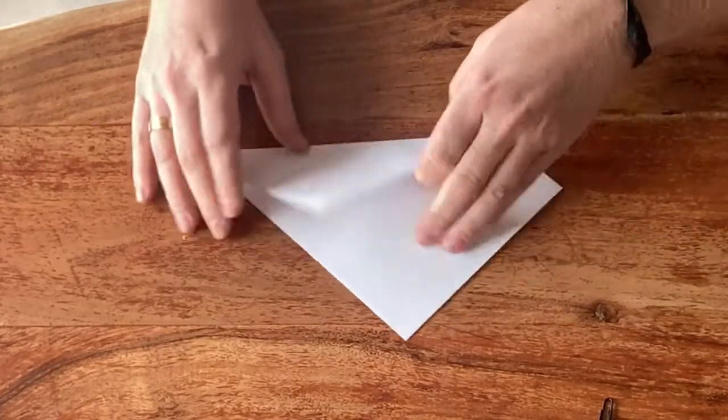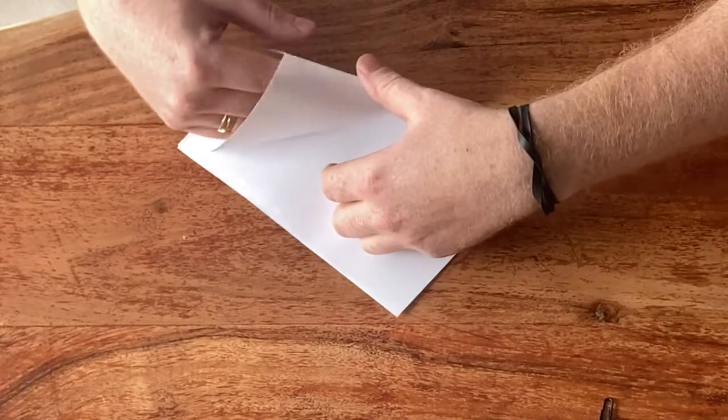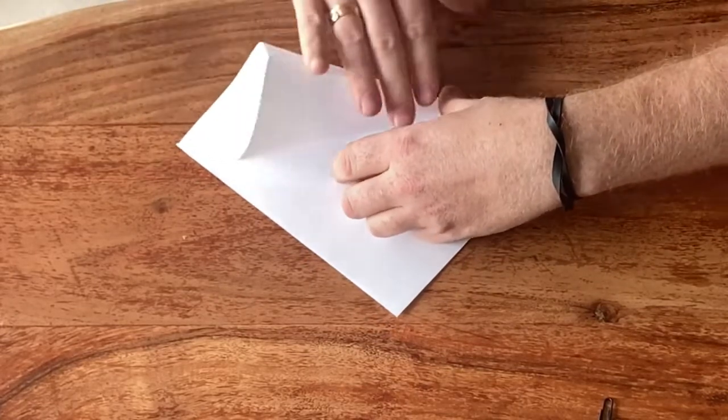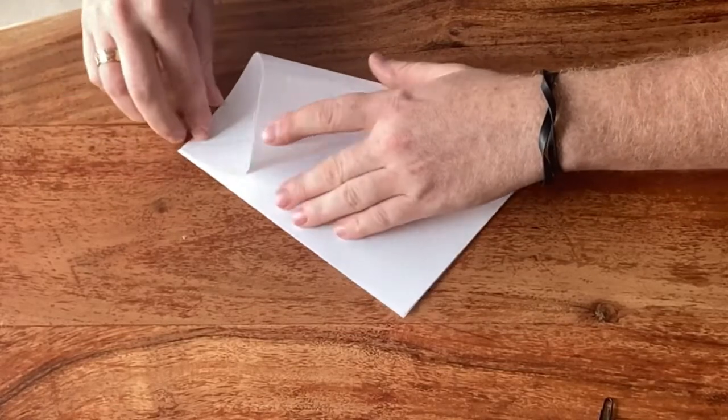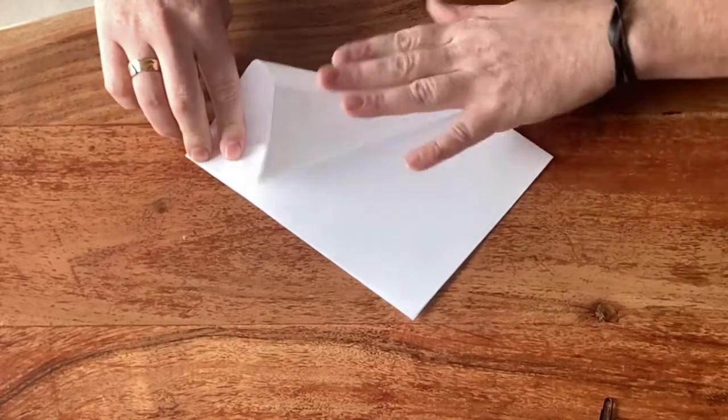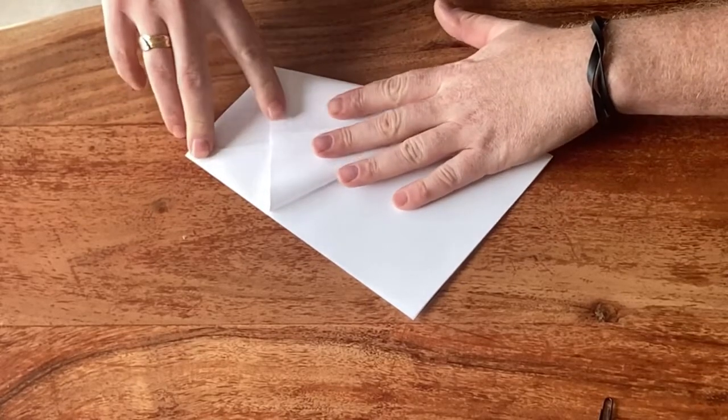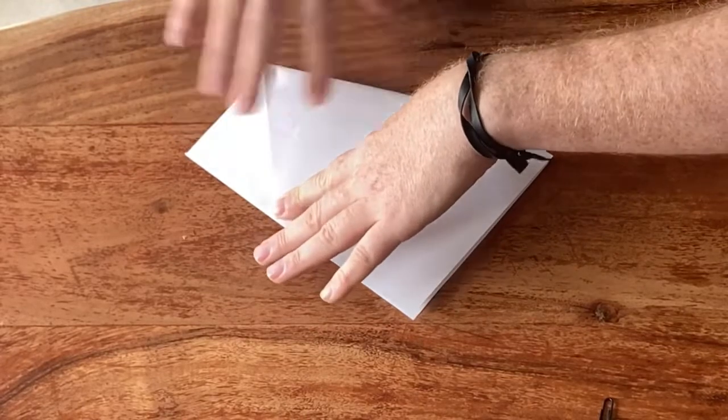Because now we are going to perform a squash fold on this flap. Try to make sure this edge is aligned with the crease behind it, like so. And just take your time to align this crease as well. Just try to be really precise here.